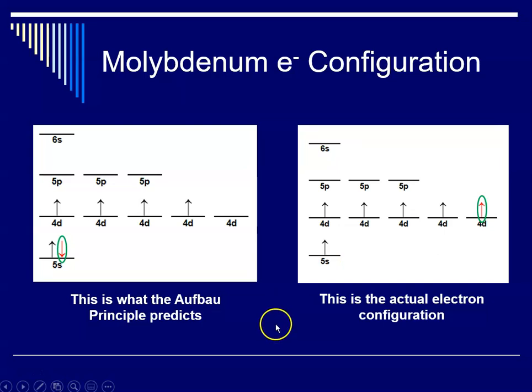So those are our Aufbau exceptions. And I'm going to end it there. This is Miss Augustine signing off.